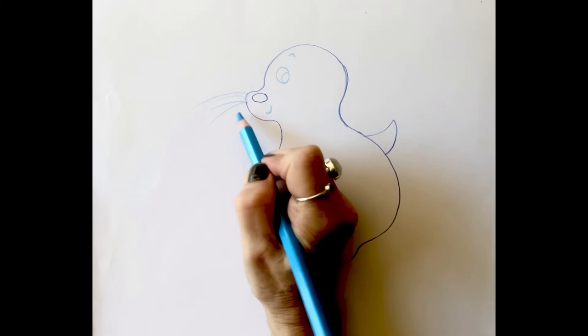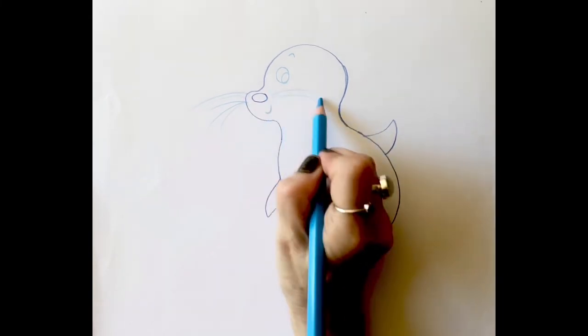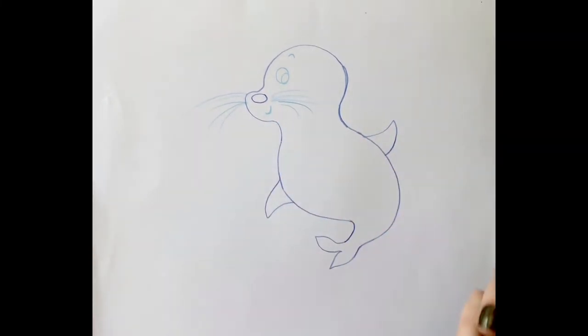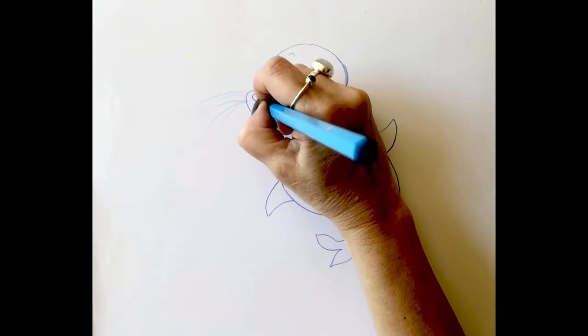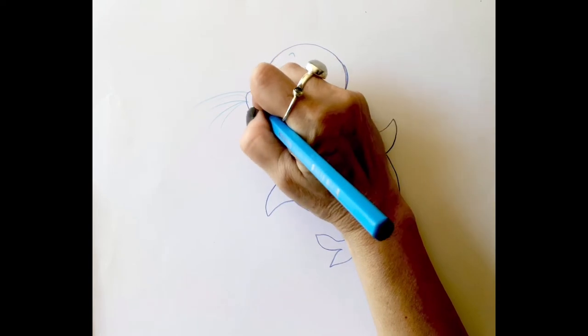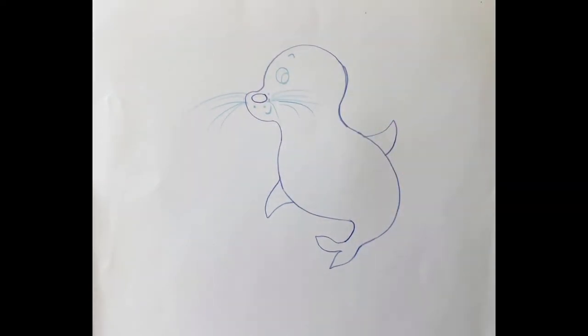Now I'm putting in the seal's whiskers and they're very wispy and light. You can put as many whiskers as you like. Now some dots around the seal's nose, around the whiskers. You can put as many dots as you like as well.